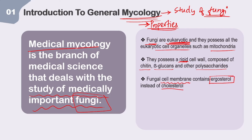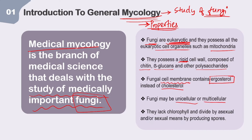Fungi can be unicellular or multicellular. Fungi also lack chlorophyll. In terms of reproduction, they divide by asexual and/or sexual means by producing spores — spore production is an important characteristic.